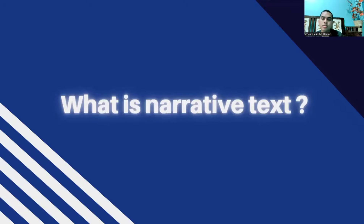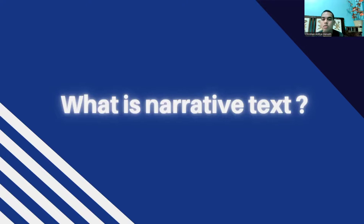First, what is narrative text? Narrative text is a type of text that shows a series of events in a chronological or interconnected system. Narrative text is generally imaginative — not real — it is a form of the author's imagination. Because it is fictional, the main purpose of narrative text is to entertain the readers or listeners of the story.